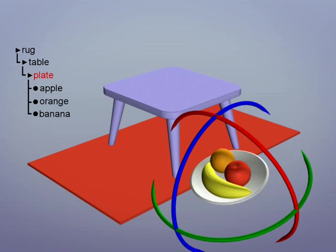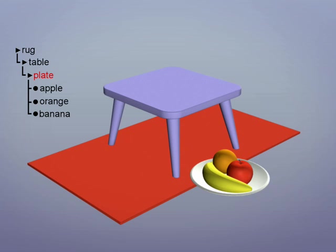The plate takes the fruit because the fruit objects are below, but leaves the table and the rug above.